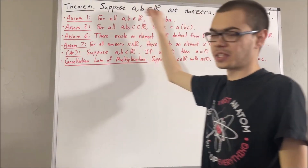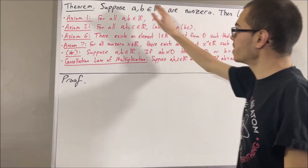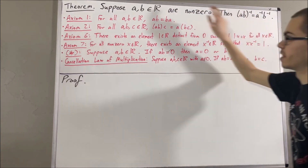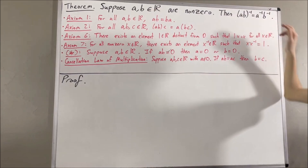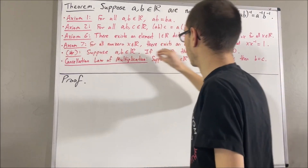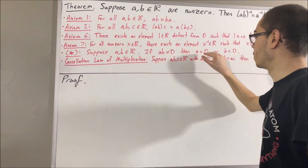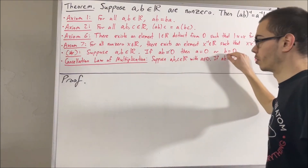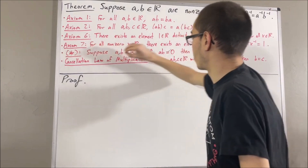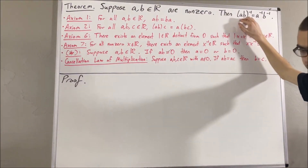Now let's get into proving this theorem. First, let's ask ourselves if this statement makes sense. Since A is non-zero, by axiom 7, we can make sense out of the reciprocal of A. Since B is non-zero, we can make sense out of the reciprocal of B. But can we make sense out of the reciprocal of AB? Well, by star, we know if AB is equal to 0, then A is equal to 0 or B is equal to 0. The contrapositive tells us if A is not equal to 0 and B is not equal to 0, then AB is not equal to 0. So since AB is not equal to 0, we can make sense out of the reciprocal of AB.